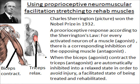The method used is called PNF stretching — proprioceptive neuromuscular facilitation stretching. It's a well-established Nobel Prize winning theory advocated by Sir Charles Sherrington, who got the Nobel Prize in 1932.